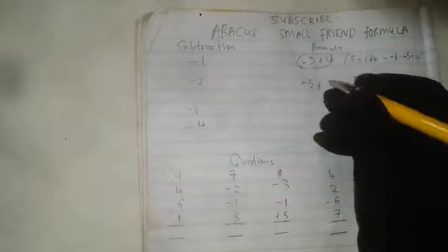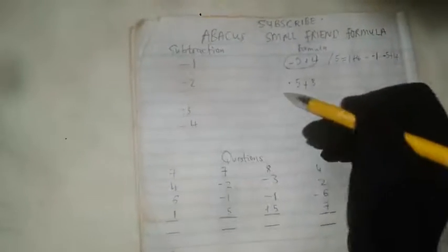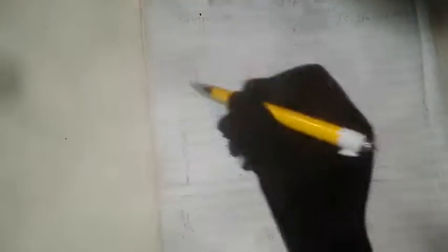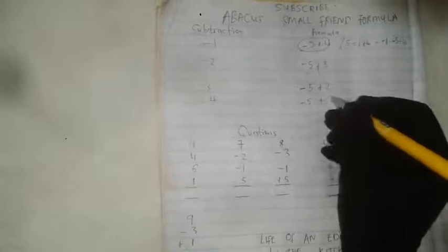To take away two, you take away five first and add three — because two and three are friends that make five. To take away three, you take away five and add two. To take away four, you take away five and add one. Everything here is just the vice versa: once you know the addition code, you get the subtraction code. So to subtract one: take away five, add four. To subtract two: take away five, add three. To subtract three: take away five, add two.